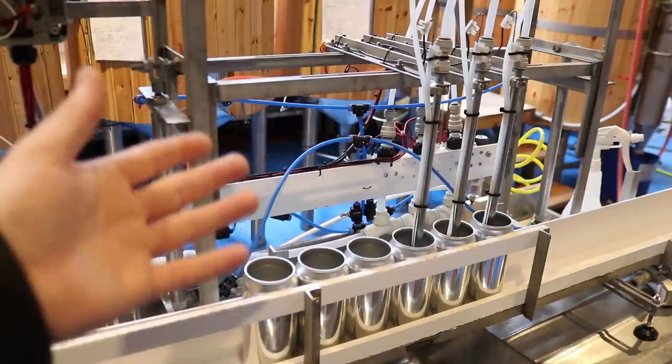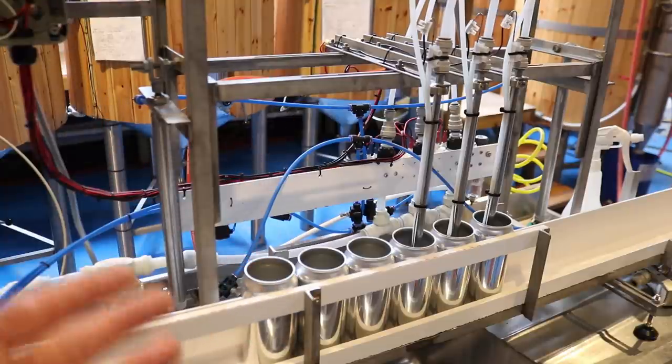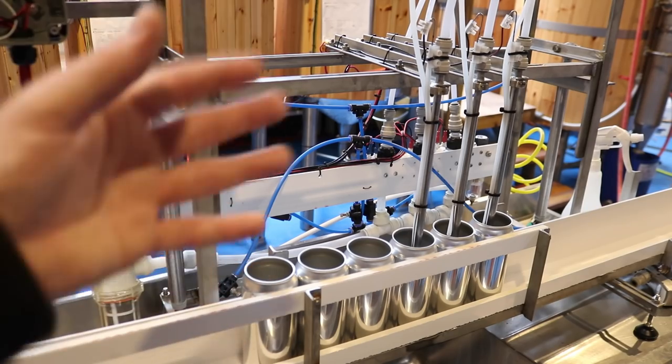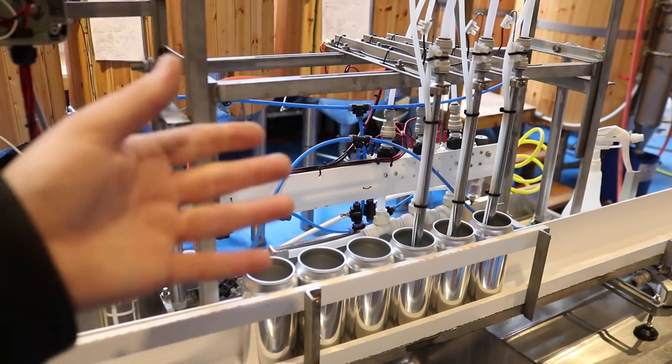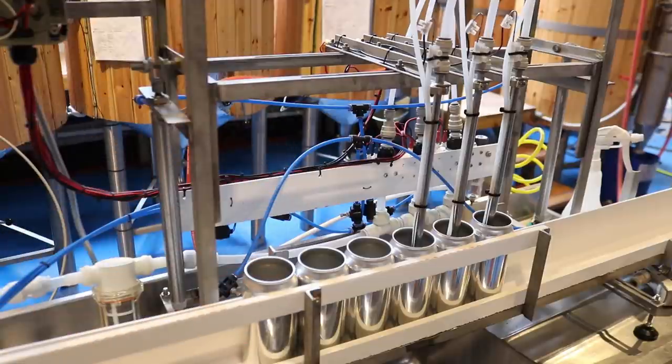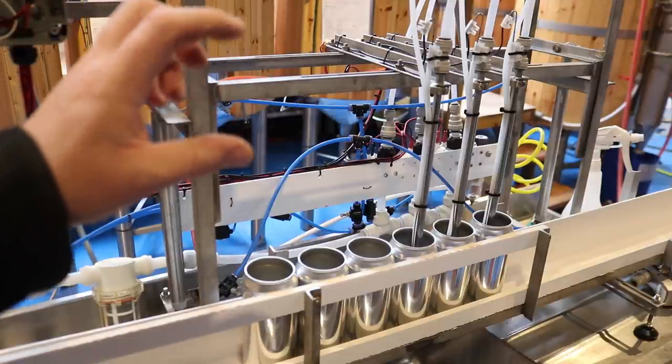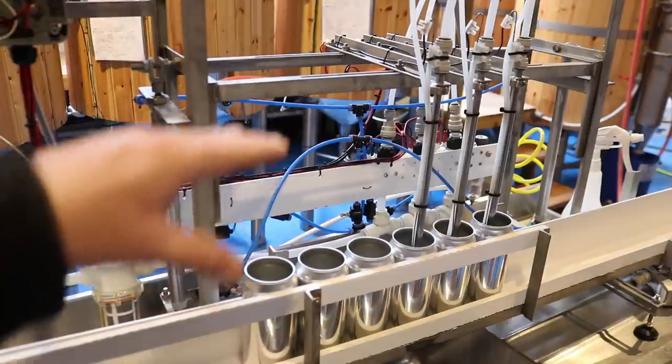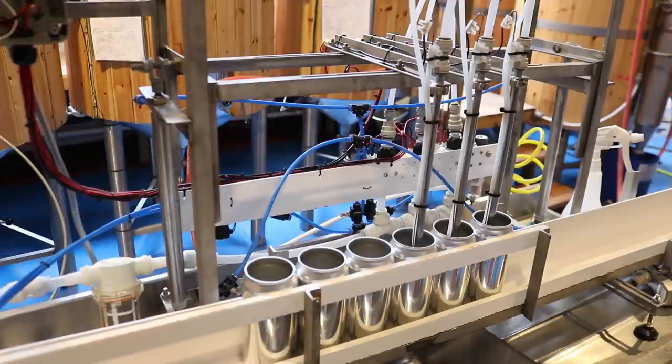If you're filling carbonated beer, you can set it to ignore the foam and only trigger when the probes touch the beer itself. It works a treat and is consistent. We don't get much foaming because it's going in cold crashed, then we heat it back up in can with priming sugar so it can re-ferment.